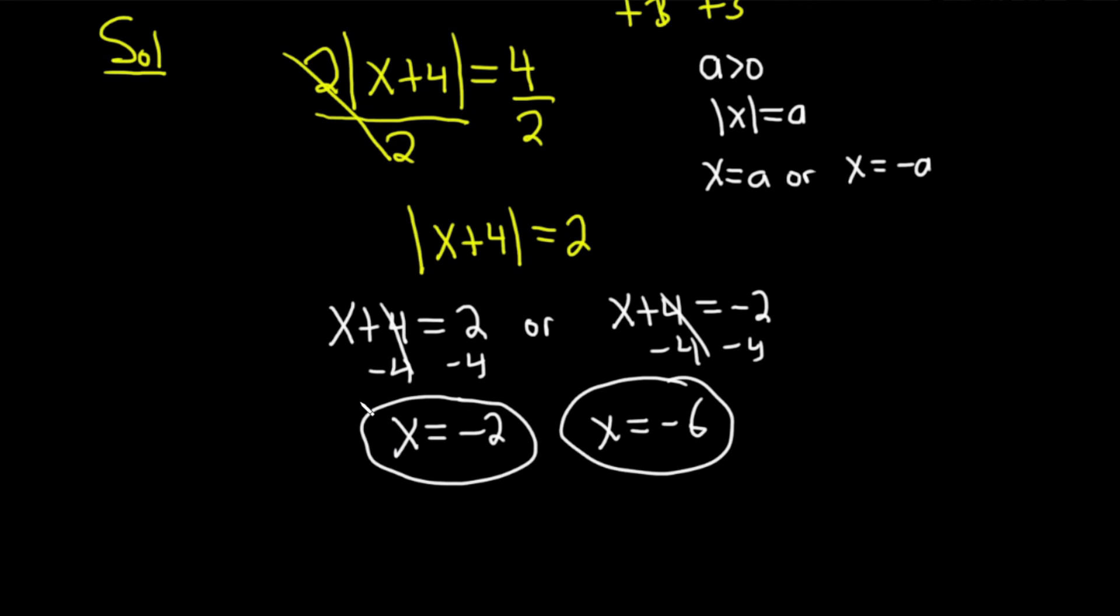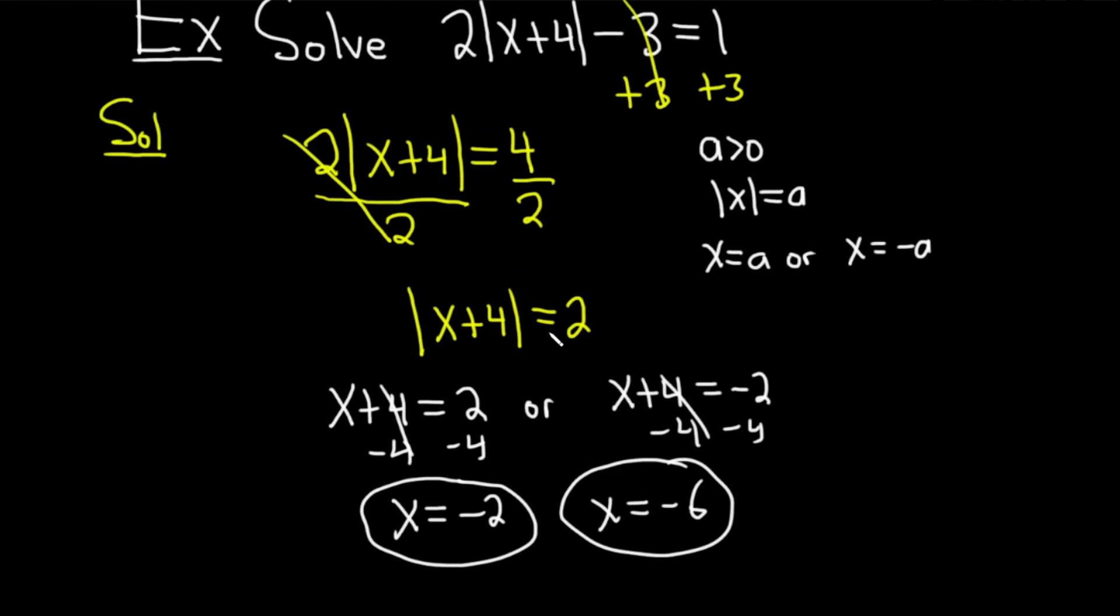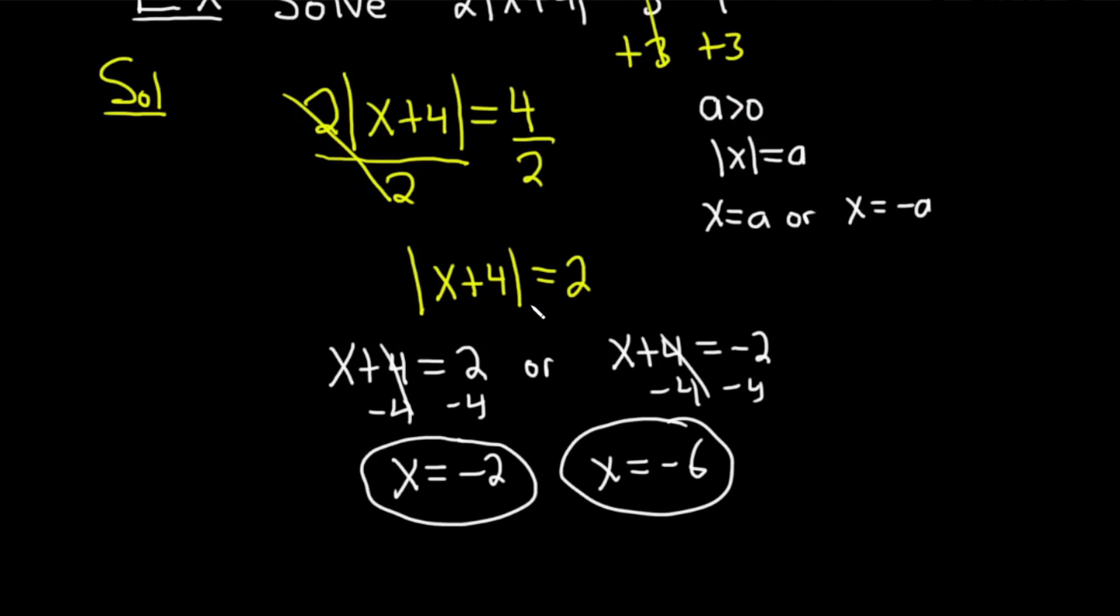So whenever you have an absolute value equation, you first want to solve for the absolute value. And then when you solve for the absolute value, then you want to use this rule. And this rule will allow you to drop the absolute value and solve. Super useful and super important. Hopefully, you've learned some mathematics in this video. If you enjoyed this video, make sure to check out more videos on Chegg. Until next time, good luck.